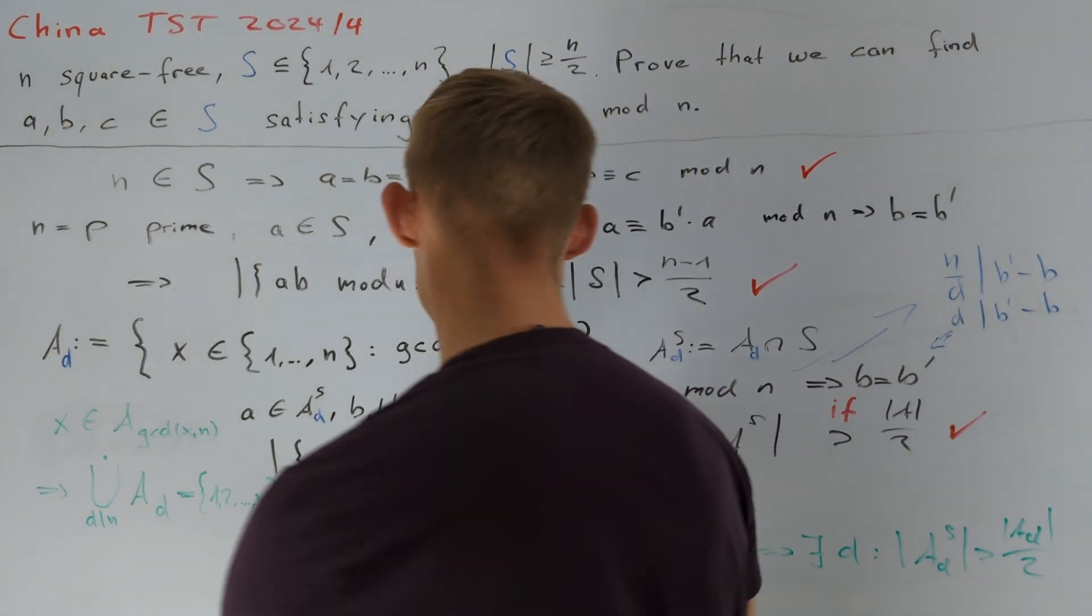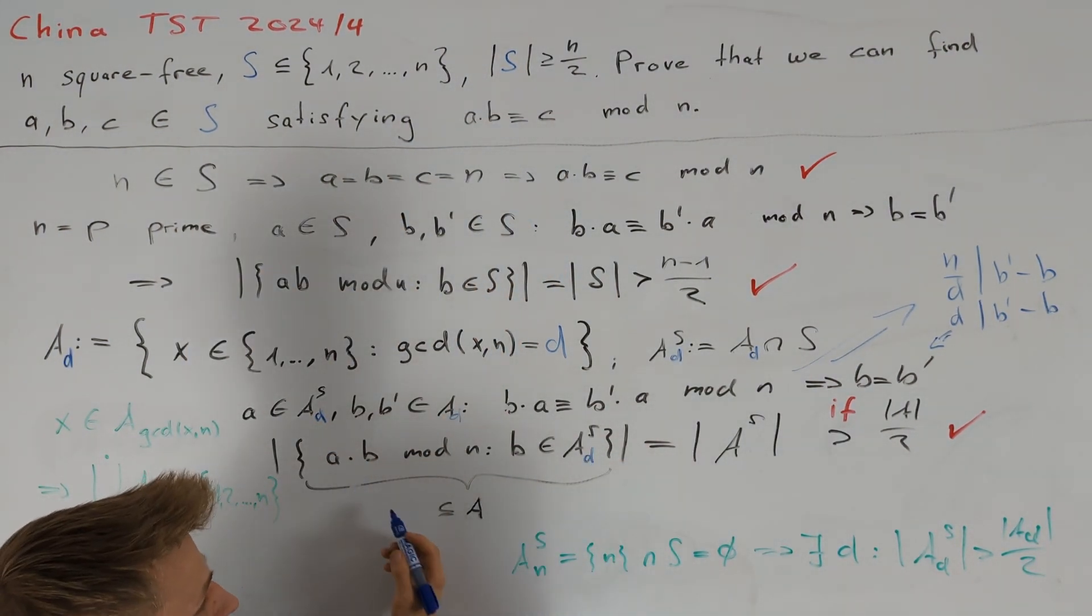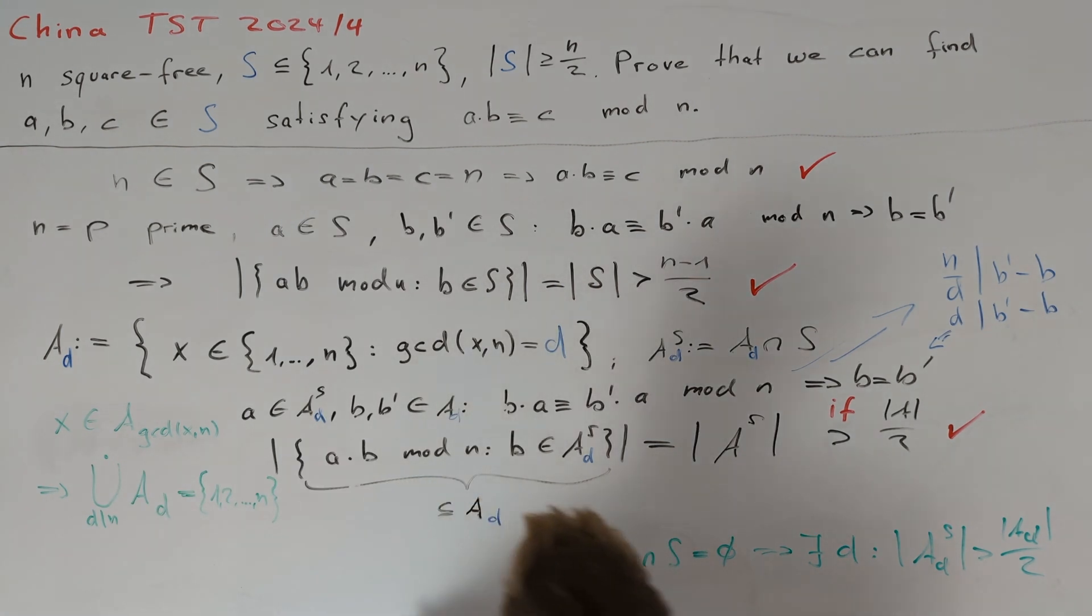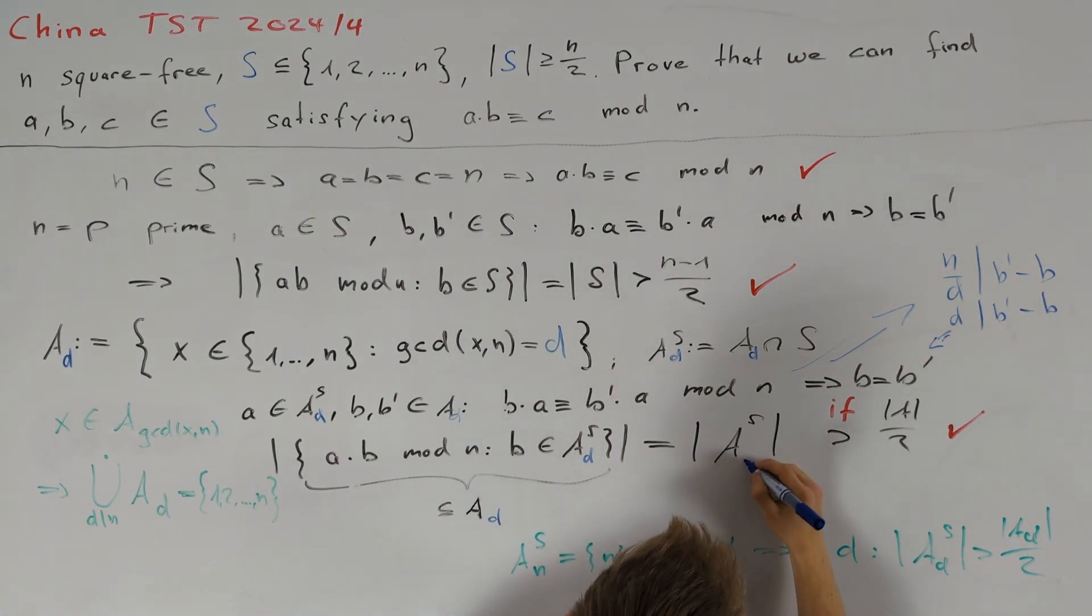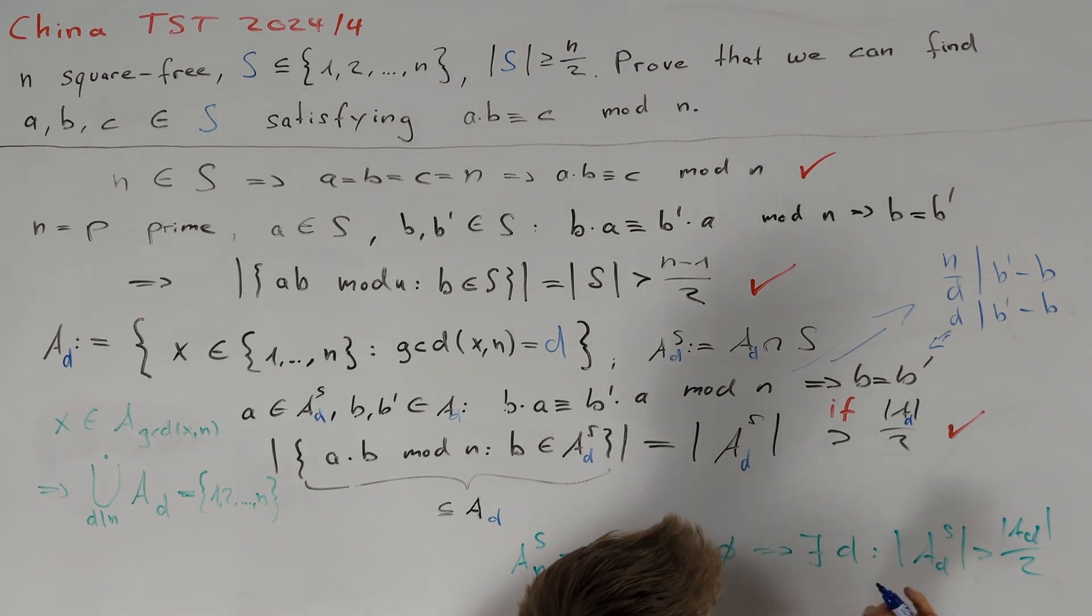For the second property, let's consider this set here where b is an element of A_d,S. We know that a times b is divisible by d and we also know that a times b is co-prime to n divided by d because n is square free. Therefore, this set here is again indeed a subset of A_d. We have that the size of this set here is equal to the size of A_d,S. And now, if we have that this size is greater than the size of A_d divided by 2, then we are done. But we already know that we can find a value for d such that this inequality is true and therefore we are done.